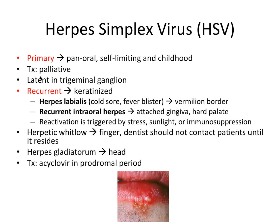After the primary infection, the virus never leaves the body — it stays latent or dormant in the trigeminal ganglion. That infection can return, and that's when you get a recurrent herpes simplex virus. Reactivation can be triggered by stress, sunlight, or immunosuppression, to name a few. When this recurrent infection comes back, it looks a lot different from the primary infection. One of the most common manifestations is herpes labialis, which can also be called recurrent extra-oral herpes.